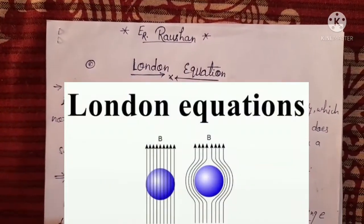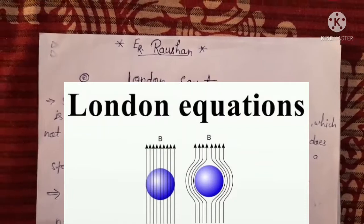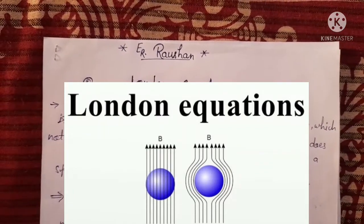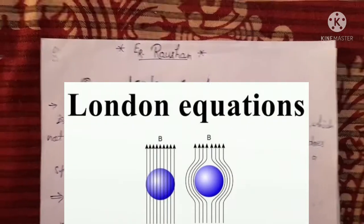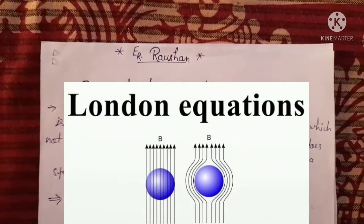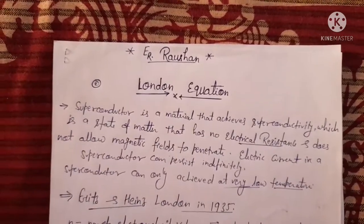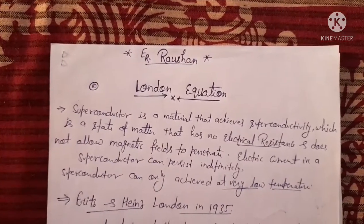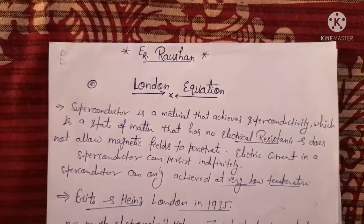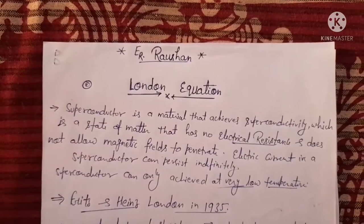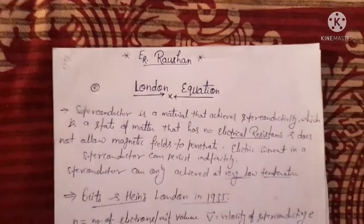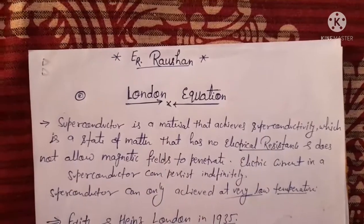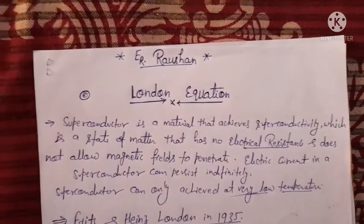Hi friends, today we discuss a very interesting question because this question is related to a country name — generally known as England, the British government, London. So this is a very interesting question. How is this equation related to a superconductor? What is this equation saying, and how does its name relate to it? My today's topic is: London equations. What is a London equation?